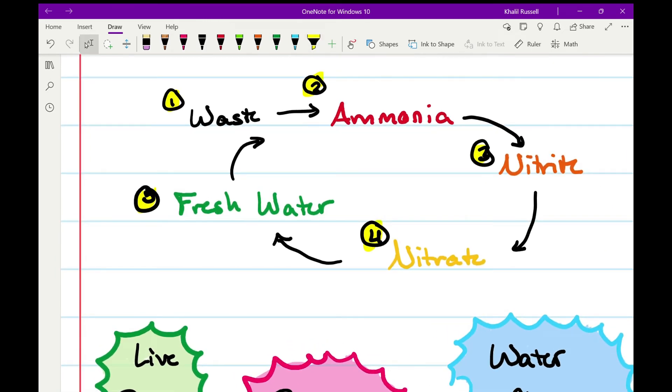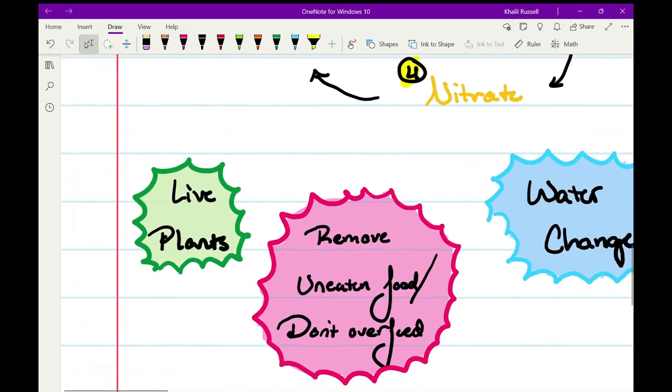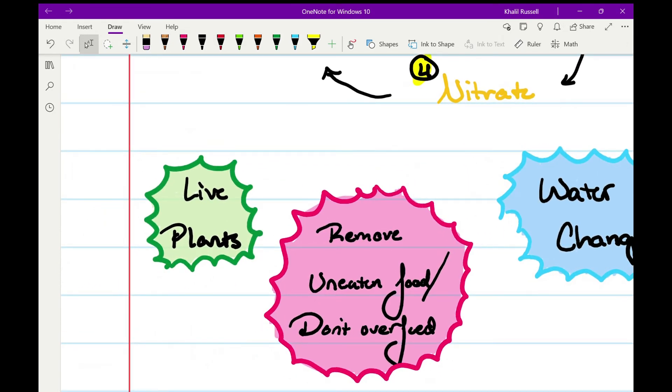So what are some tips related to the nitrogen cycle that you can focus on to help your fish? Well, one, live plants. Live plants are great for the nitrogen cycle as I just explained because they take out those nitrates.